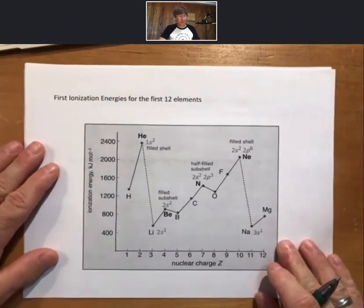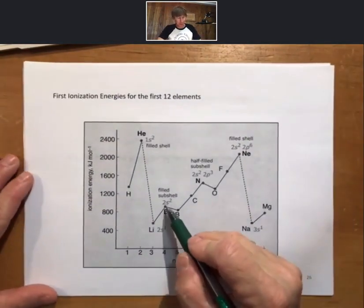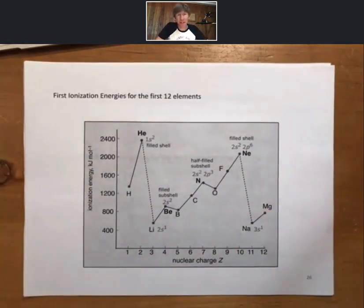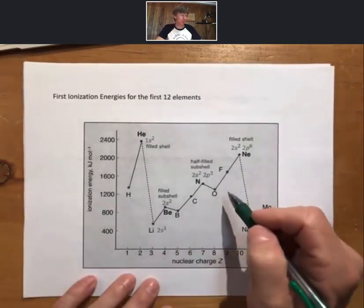A close-up here shows that there are some filled subshell and half-filled subshell effects. We saw something similar when we were talking about the exceptions to the shape of the periodic rule for the coinage metals, as far as electron configurations go, and for chromium and molybdenum. Similar things are going on here as well.